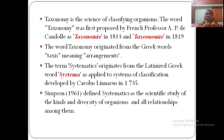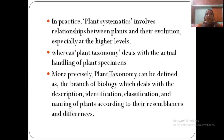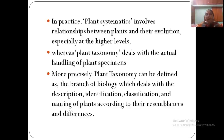The term systematics, also called plant systematics, originates from the Greek word 'systema' and is applied to systems of classification. Simpson, a famous scientific taxonomist, defined it as the scientific study of the kinds and diversity of organisms and all their relationships. It involves the relationship between plants and their evolution — for example, how angiosperms originated and the relationships between different plant groups.